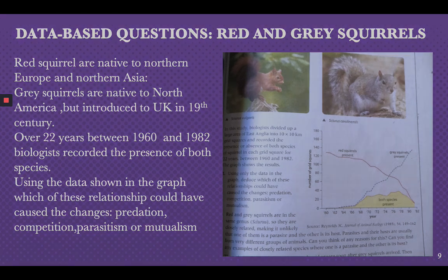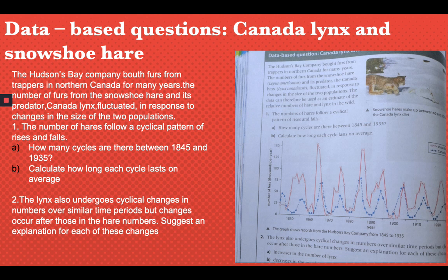The second data-based question is about the Canada lynx and snowshoe hare. The Hudson's Bay Company bought furs from trappers in northern Canada for many years, and the numbers of snowshoe hare and its predator the Canada lynx fluctuated in response to changes in population size. You need to answer three questions: how many cycles are there between 1845 and 1935, how long does each cycle last on average, and why the lynx population undergoes similar cyclical changes but shifted in time relative to the hare numbers — suggest an explanation for each of these changes.